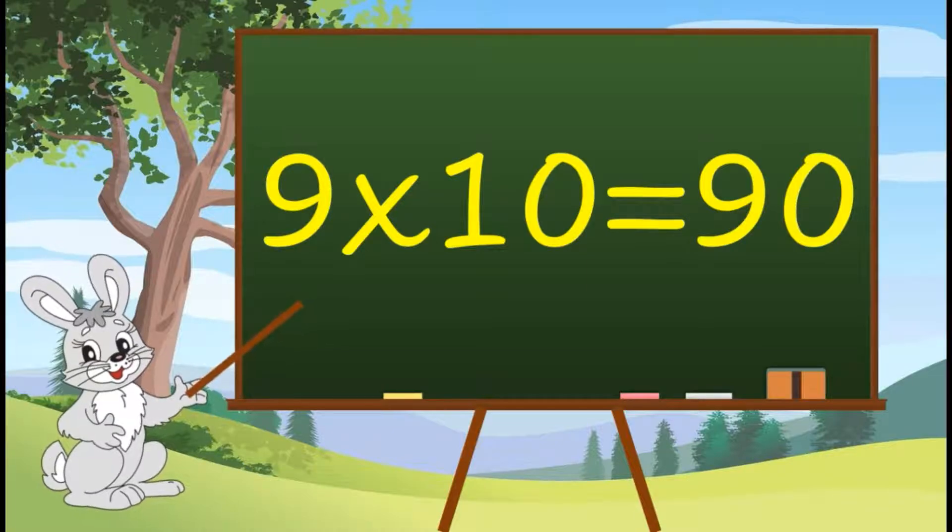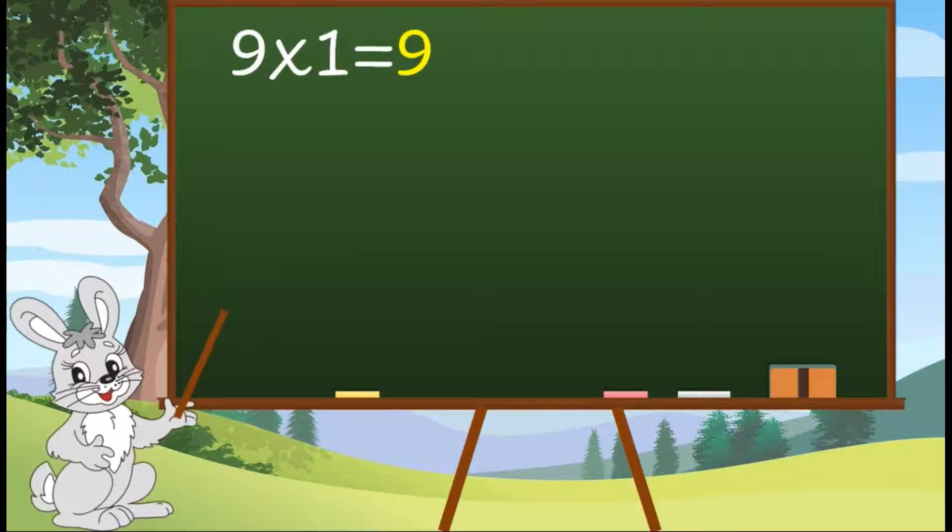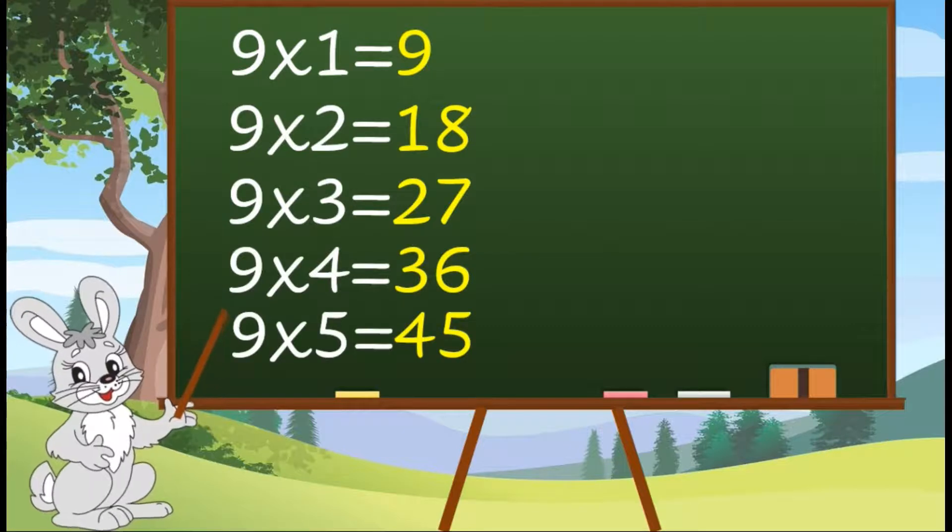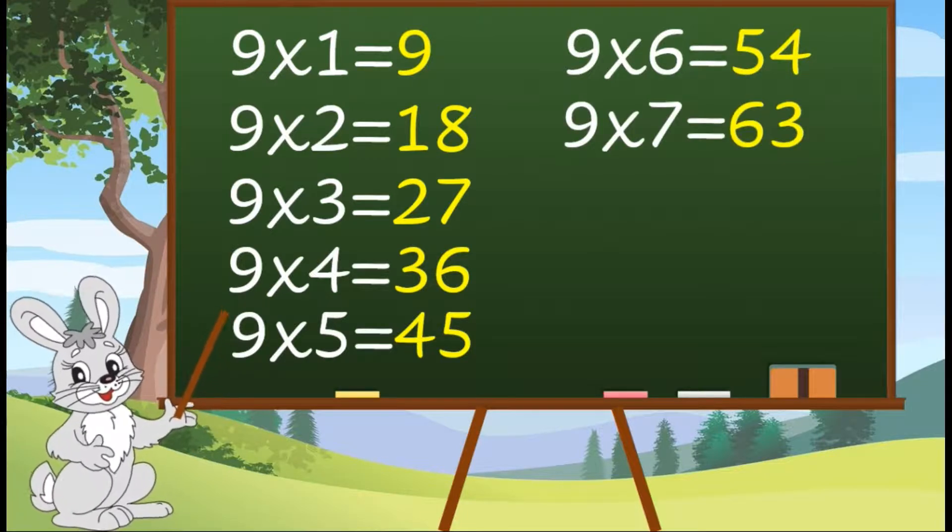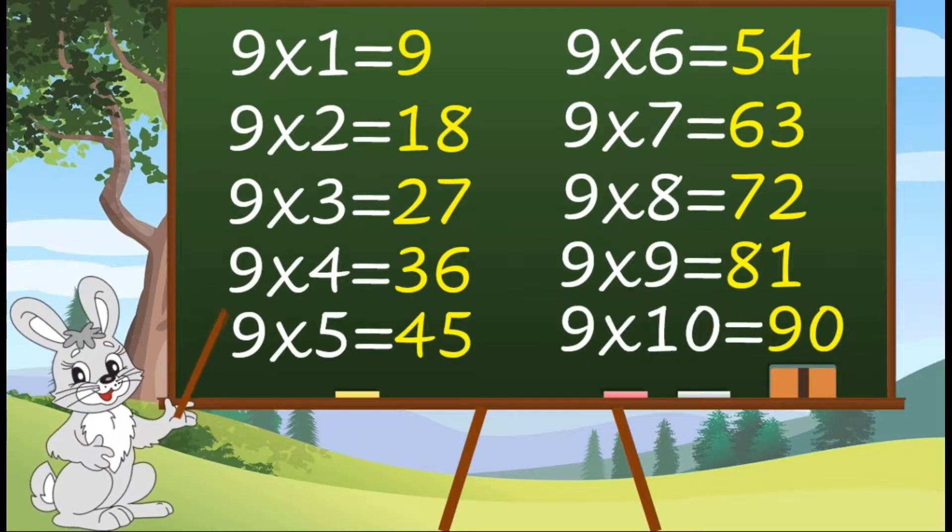9 1s are 9, 9 2s are 18, 9 3s are 27, 9 4s are 36, 9 5s are 45, 9 6s are 64, 9 7s are 63, 9 8s are 72, 9 9s are 81, 9 10s are 90.